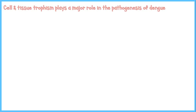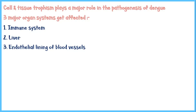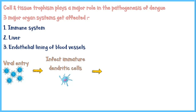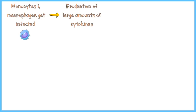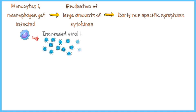Cell and tissue trophism of the virus plays a major role in the pathogenesis. Three major organ systems are affected: the immune system, the liver, and the endothelial lining of blood vessels. During a mosquito bite, the virus enters through the skin and infects immature dendritic cells in the skin. These infected dendritic cells reach the lymph nodes, where monocytes and macrophages are recruited to halt the infection. However, these cells also get infected by the virus, causing them to secrete large amounts of cytokines into the bloodstream, which mediate the early non-specific symptoms. When monocytes and macrophages are infected, they are unable to halt viral replication, resulting in an increased viral load, while the host cells undergo death by apoptosis.